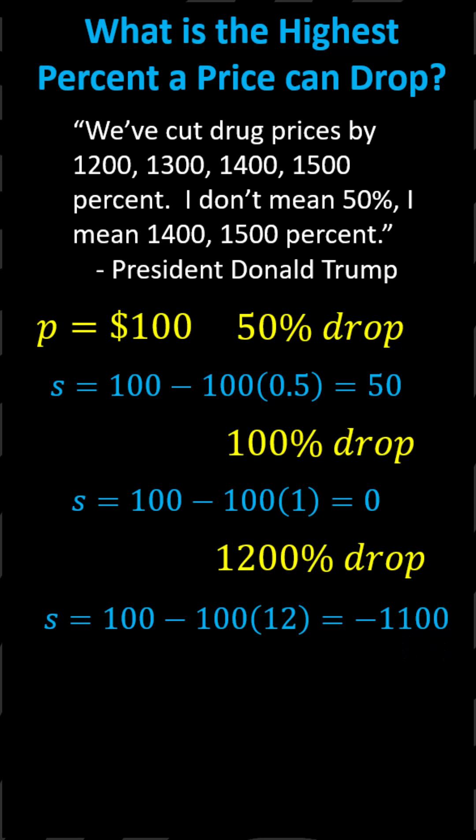And a 1,500% price drop gives a sale price of negative $1,400, meaning the drug company would give you $1,400 for taking their drug.